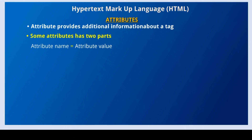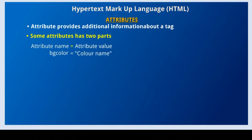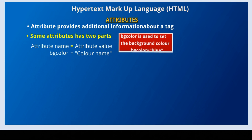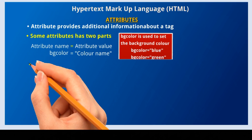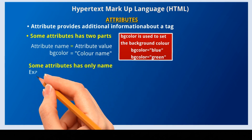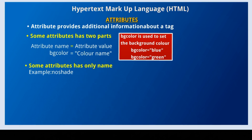An example of attribute is bgcolor. bgcolor equals color name. The attribute bgcolor is used to set the background color. The value of this attribute can be any color name — bgcolor equals blue, bgcolor equals green, etc. But some attributes have only a name, for example NaShade. Now we can see how to insert an attribute in a tag.